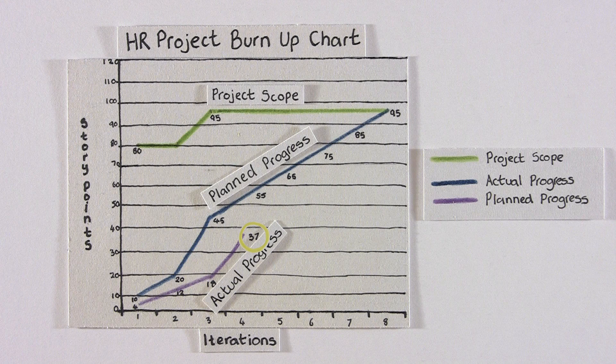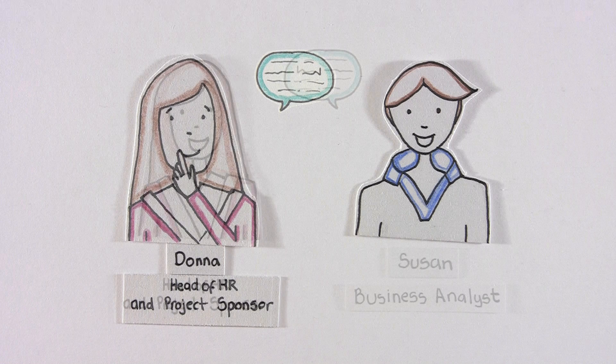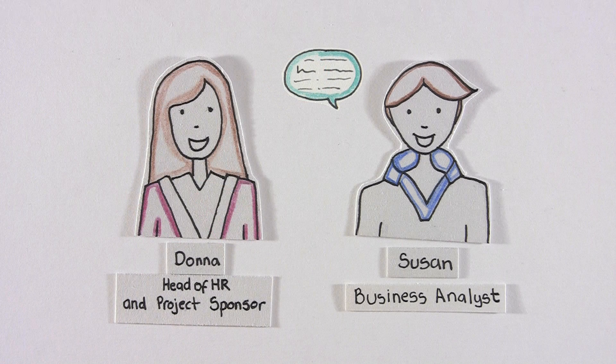The chart clearly allows us to see what is required to deliver the project. Donna asks: 'Let me make sure I understand — does it mean that if the velocity in the next iteration continues like the 4th iteration, that the scope will now be met?' Susan replies: 'That's right Donna. If we keep powering through at the present velocity, we should achieve all the desired scope by the end of iteration 8.'